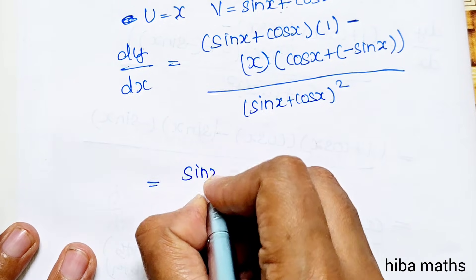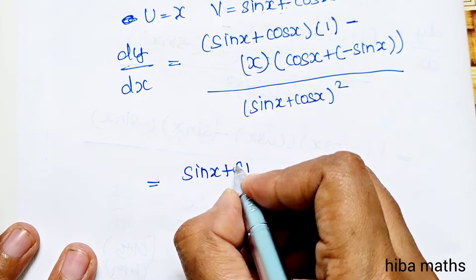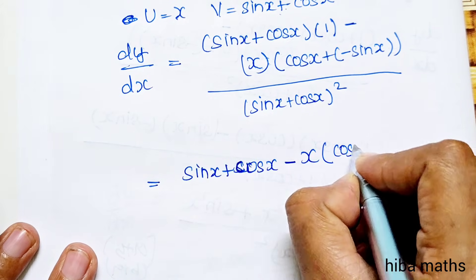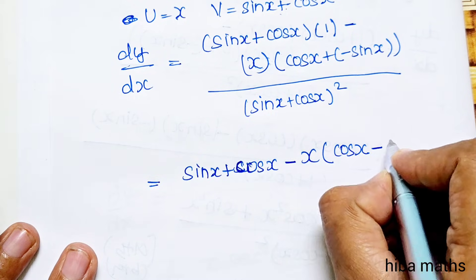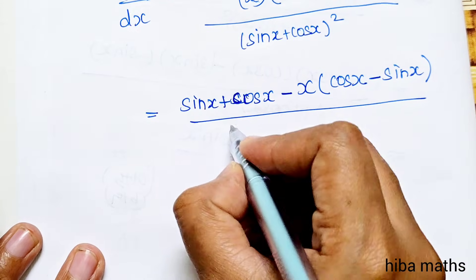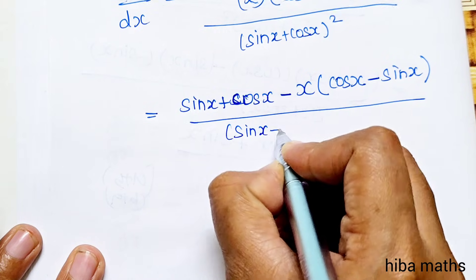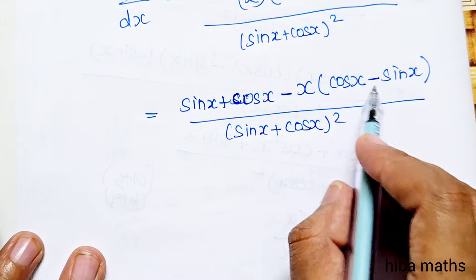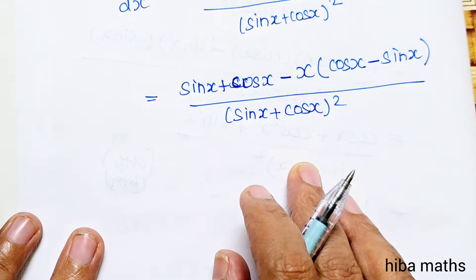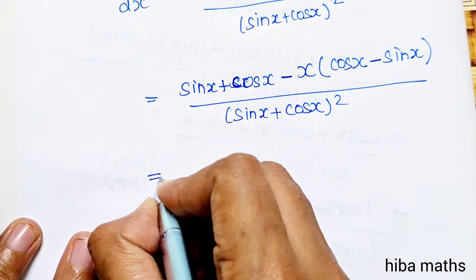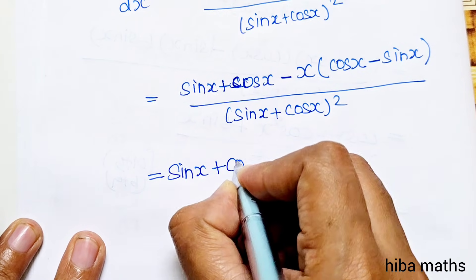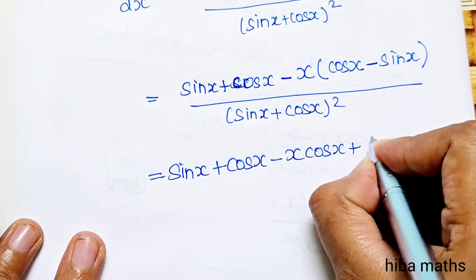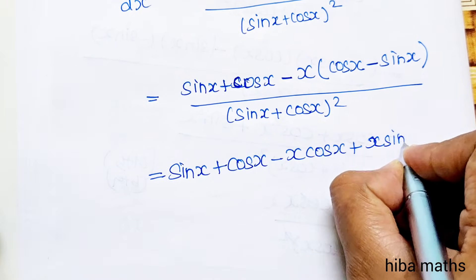Multiplying through: (sin x plus cos x) times 1, minus x times (cos x minus sin x), divided by (sin x plus cos x) whole square. Now the minus sign is brought in, and x is distributed inside. That gives: sin x plus cos x minus x·cos x, and minus becomes plus x·sin x.